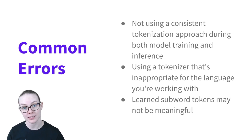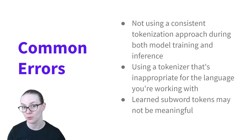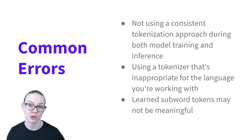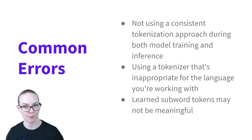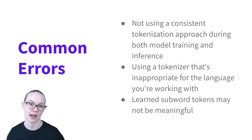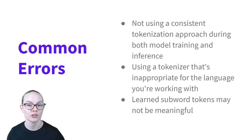Finally, if you're using a subword tokenizer that was trained in an unsupervised way, you might end up with tokens that are incorrect. For example, someone's first name might be tokenized into multiple tokens, even though it should be considered a single word.